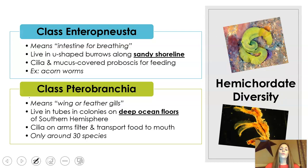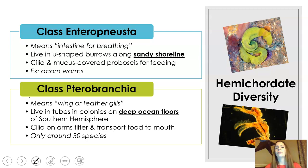Within this phylum, there are two classes to know. First is class Enteropneusta, which means 'intestine for breathing.' These are found in U-shaped burrows along sandy shorelines, not very far offshore. They have a proboscis used for feeding that is covered with mucus and cilia, which helps attach particles for them to eat. The example here is the acorn worm.